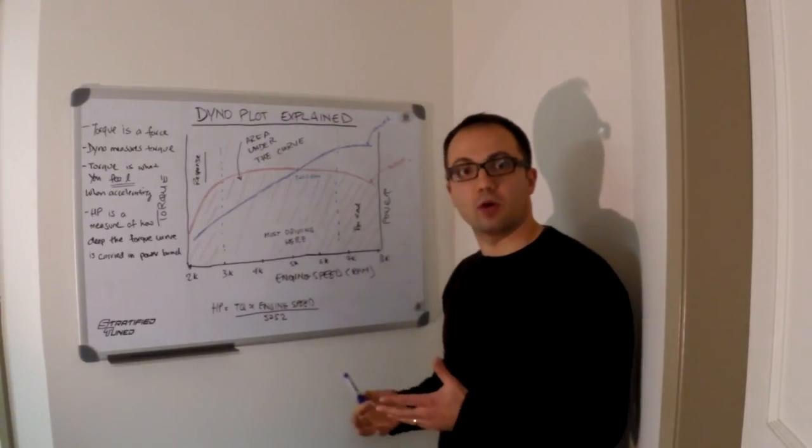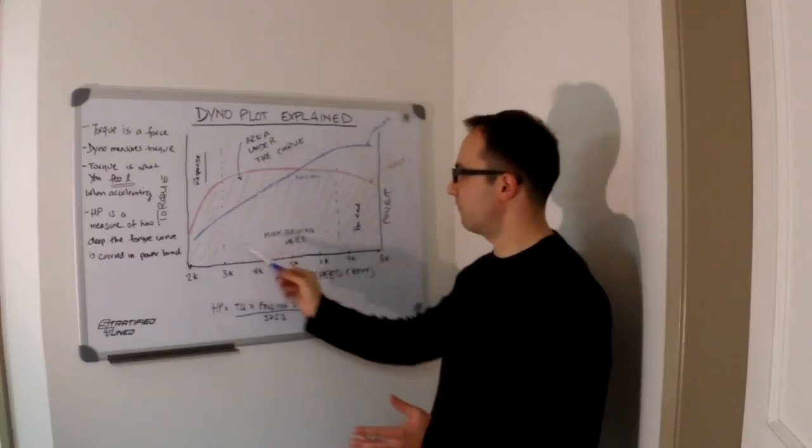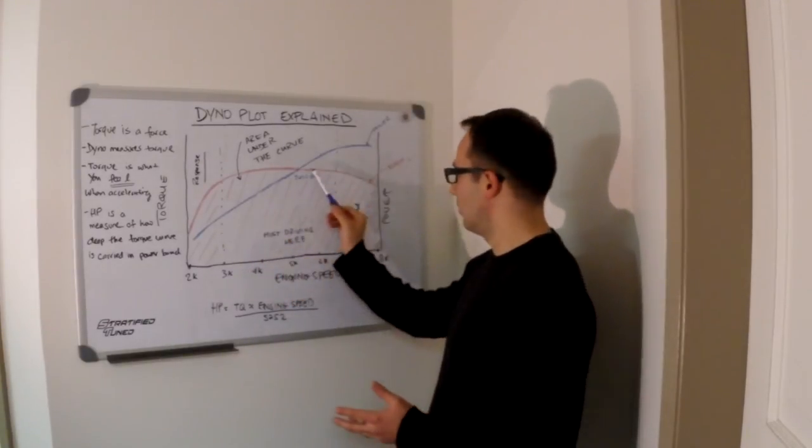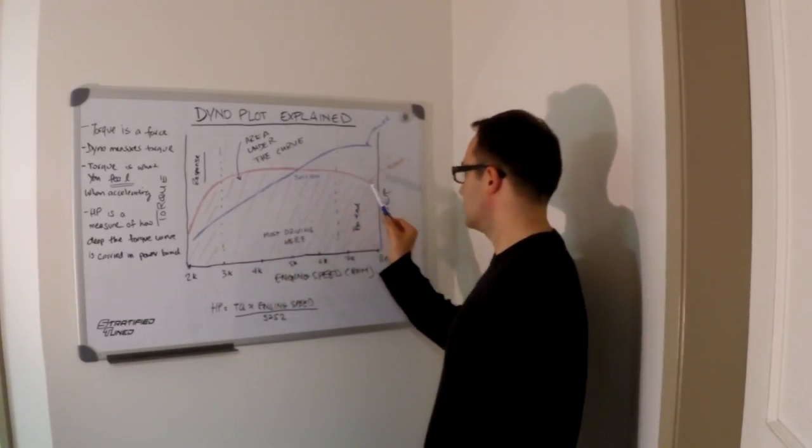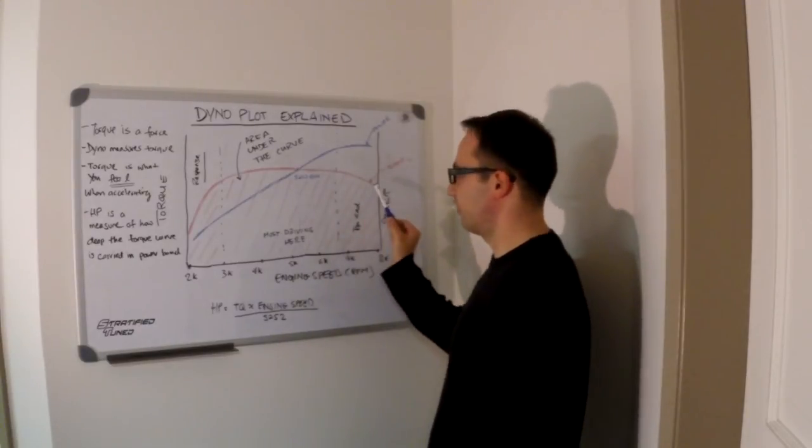However, there are always compromises. A small turbo that favors the low end will unfortunately become inefficient at top, and you'll see the torque curve start to fall off.